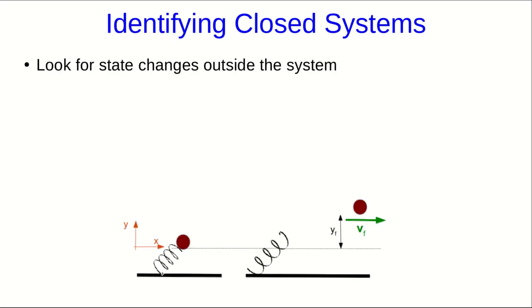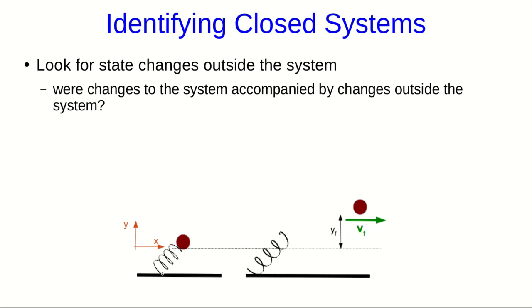Let's look at a specific and reasonably simple case of this. Suppose we take a ball and we compress a spring, and we use the spring to launch the ball into the air. So, if we want to know whether our system, and note I haven't defined my system yet, but if we want to know whether our system is closed, we need to look for state changes outside the system.